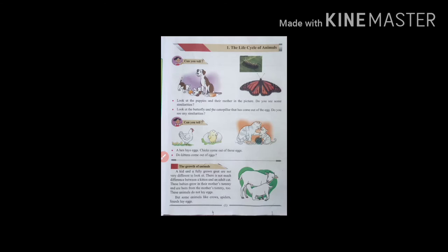The growth of animals. A kid and a fully grown goat are not very different to look at. There is not much difference between a kitten and adult cat. These babies grow in their mother's tummy and are born from the mother's tummy. These animals do not lay eggs.